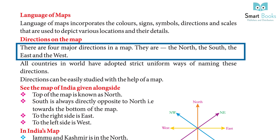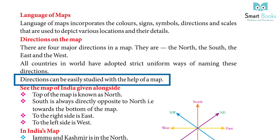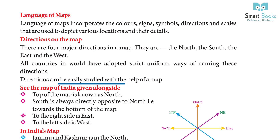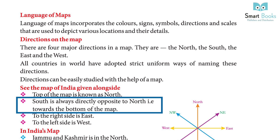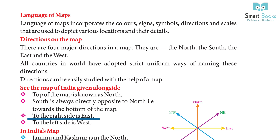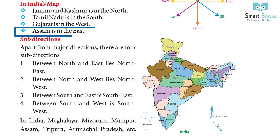All countries in the world have adopted strict, uniform ways of naming these directions. The top of the map is known as north; south is always directly opposite to north, towards the bottom of the map; to the right side is east; to the left side is west. In India's map, Jammu and Kashmir is in the north, Tamil Nadu is in the south, Gujarat is in the west, and Assam is in the east.